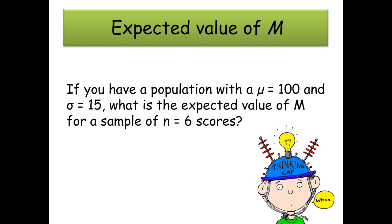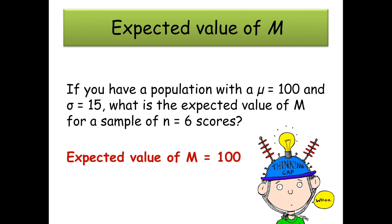If you have a population with a mu of 100 and a standard deviation of 15, what is the expected value of the mean for a sample of six scores? If you know your population mu is 100, that's your expected value of the mean — 100.